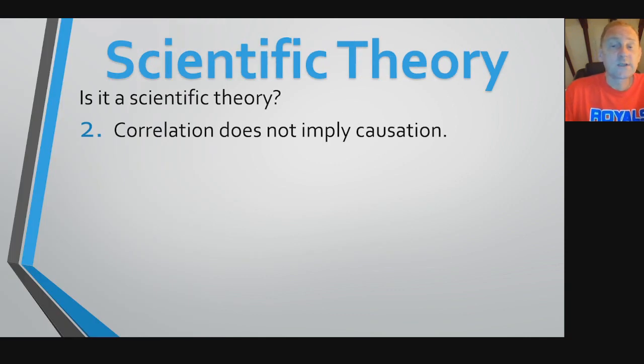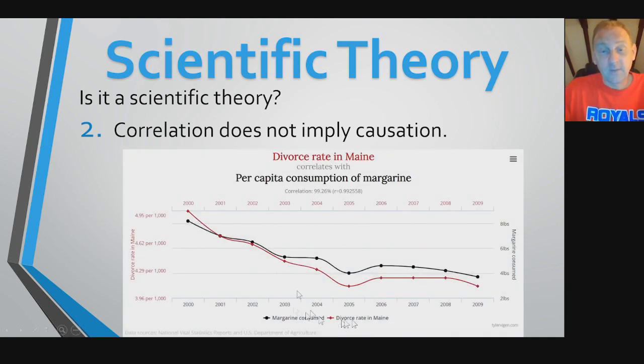The next thing is correlation does not imply causation. Correlations are not causations. That does not work in scientific theories. And here's an example. We have a graph here. In red, we've got the divorce rate in Maine. We go from 2000 and it drops down to 2005, then it goes up a little bit and drops again. But we also have on here the per capita consumption of margarine. If we look at the consumption of margarine, it was high in 2000, drops down to 2005, and then kind of levels off. So this correlation between divorce rate in Maine and the consumption of margarine, there's a correlation between the two. But that doesn't mean causation. This doesn't mean that divorces are causing people to eat more margarine. And when there's less divorce, they eat less margarine. Or perhaps we could go the other way and say because people are eating less margarine, they're getting less divorces. Regardless, correlation does not imply causation. We cannot use a correlation in a scientific theory. That doesn't make it a cause.